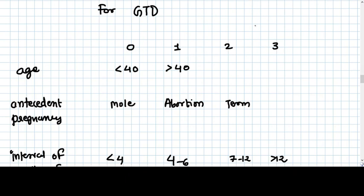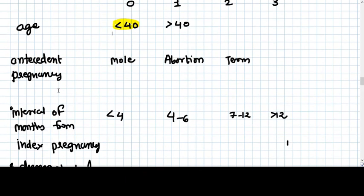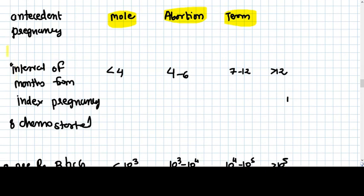What is the antecedent pregnancy? Whether it was mole, then the score is zero. Abortion is one, term is two. So severity of GTD is increasing with this score. If the choriocarcinoma is developed from a hydatidiform mole, then it's a low risk. But if it is developed after term pregnancy, then it can be a high risk.